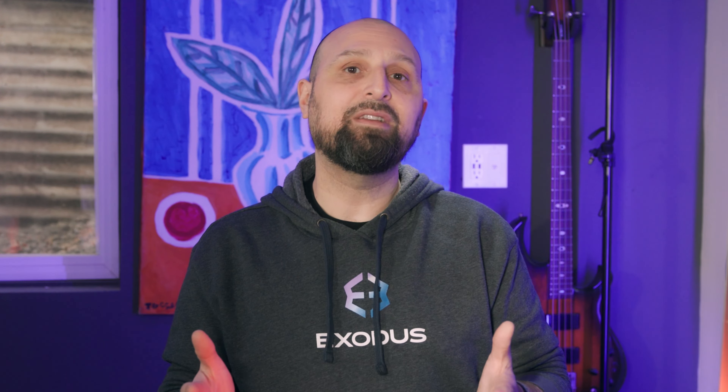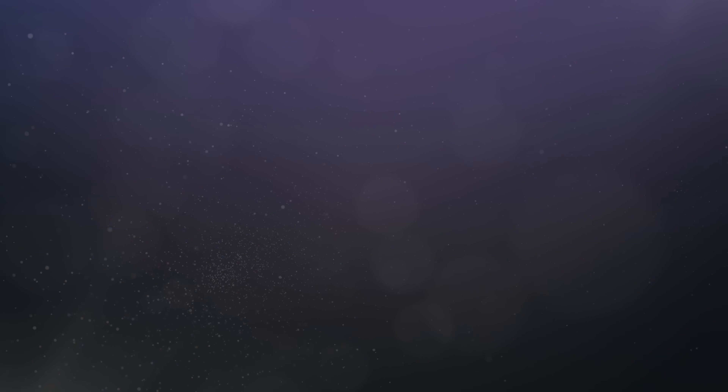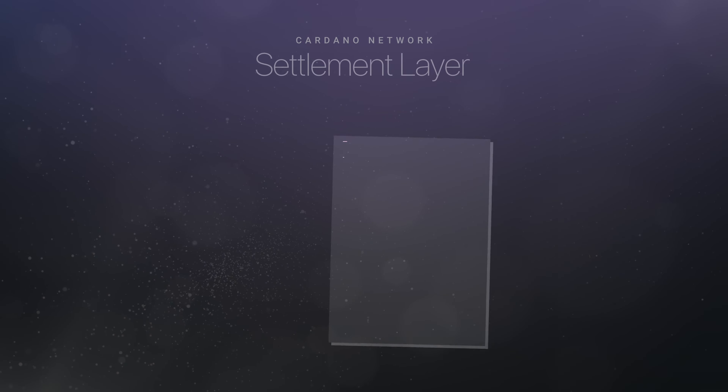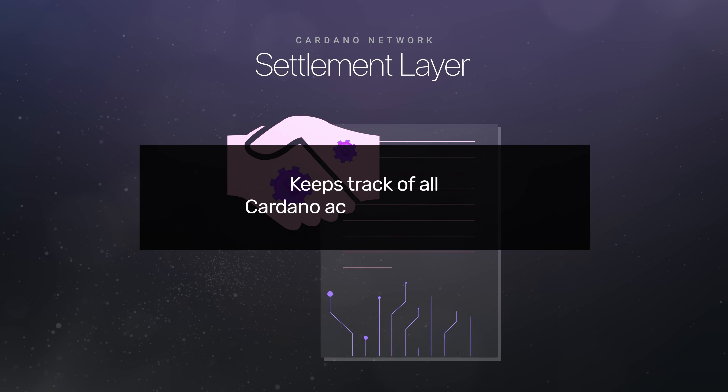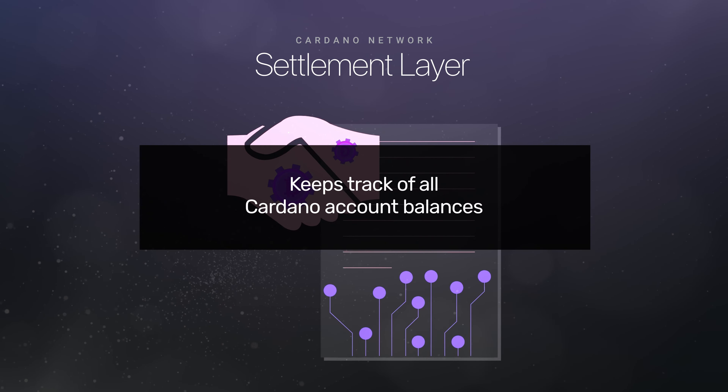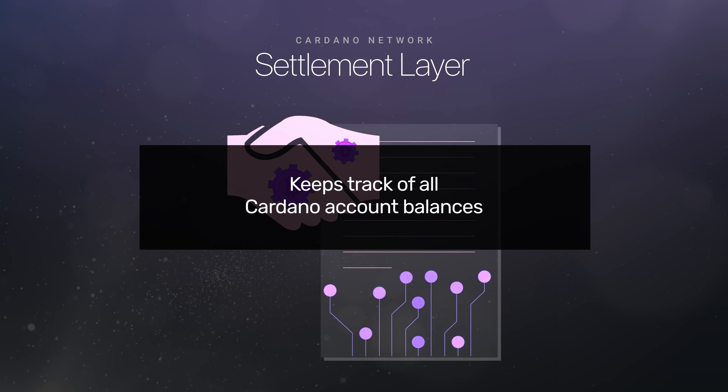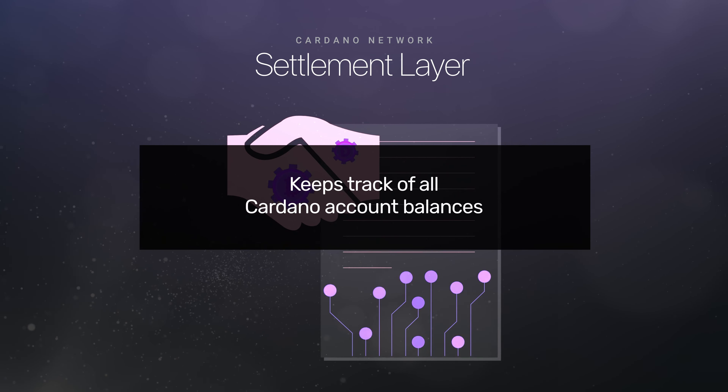What is Cardano, starting with ADA? Cardano's native token is ADA and it's used to pay for transactions on the network. It's actually named after Ada Lovelace, a 19th century mathematician and the first computer programmer. The total supply of the token is 45 billion, and around 35 billion of those are in circulation right now.